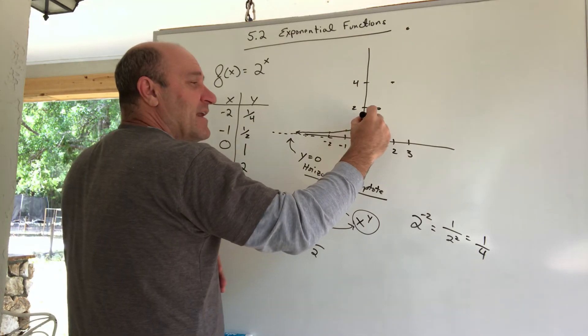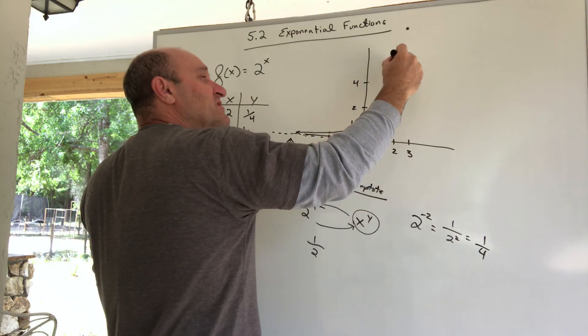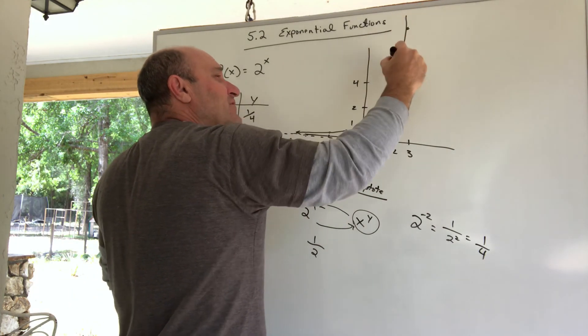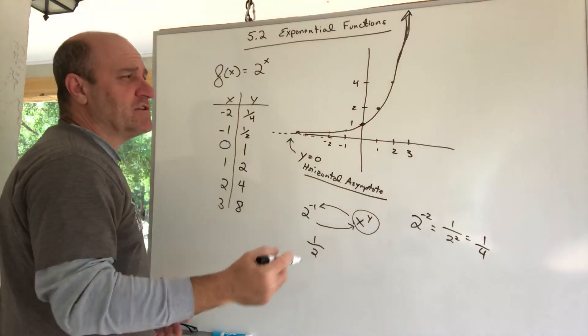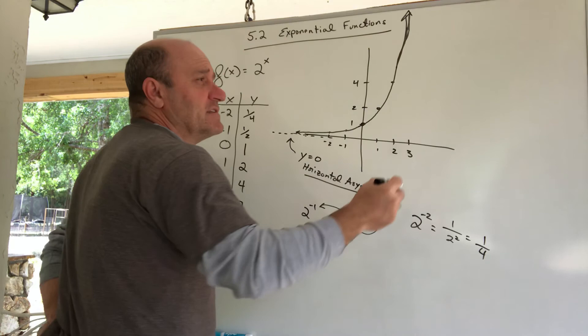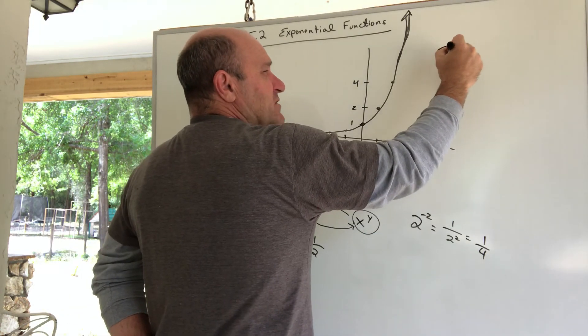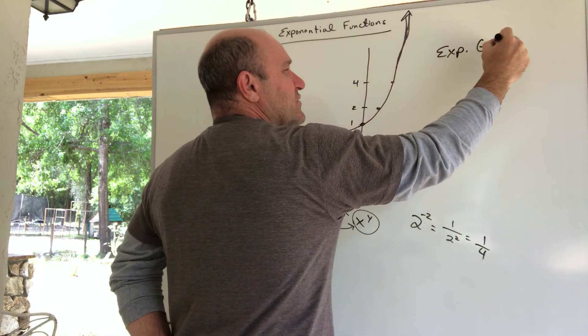Over here, it keeps going. And this is where you see what's called the exponential growth. It gets very steep, grows exponentially. And we do refer to this kind of graph as exponential growth.